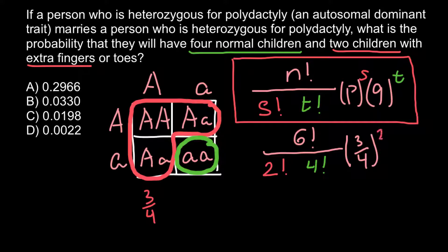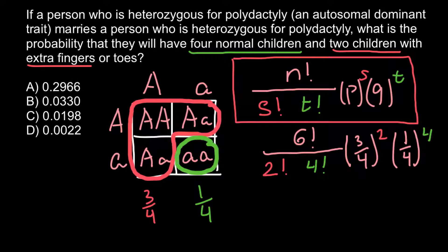We multiply by q, the probability of a phenotypically normal child, which is one quarter — since only one quarter is the probability for a heterozygous couple to have a normal child. So we put one-quarter raised to the power of four. Note that n always equals s plus t, and the probability of type-one event plus the probability of type-two event always equals one. Keep these relationships in mind to avoid mistakes.